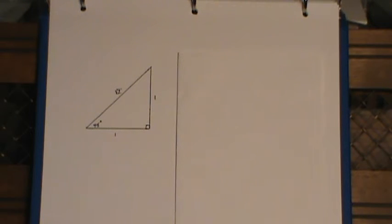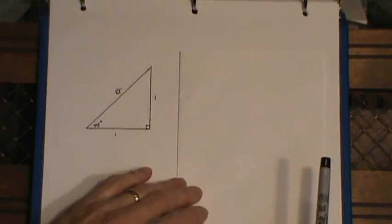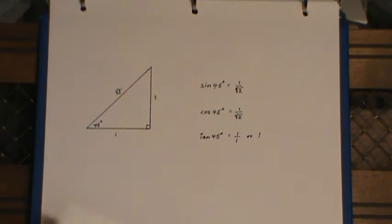that hypotenuse has to be root 2. And once again, from that triangle, you can get all of your trig ratios.